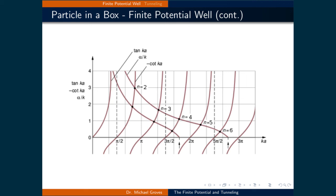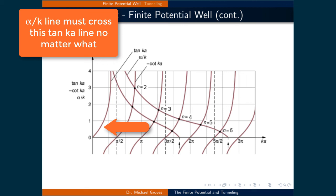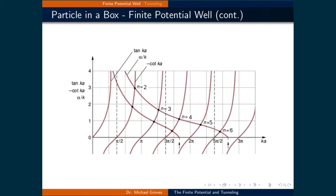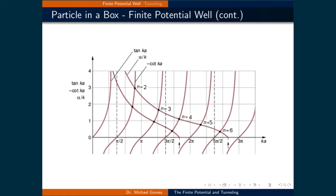As the height of the potential well decreases — meaning the well gets shallower — the α/k line shifts to the left, and there are fewer bound states. However, no matter how small the potential well is, there will always be at least one bound state. Conversely, as the potential increases and the well gets deeper, the α/k line shifts to the right, giving more bound states. As the potential increases further, we eventually recover the infinite square well solutions.